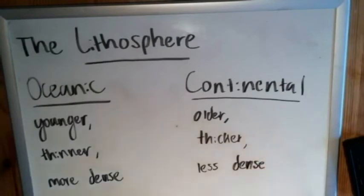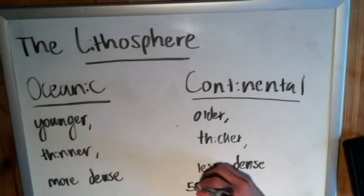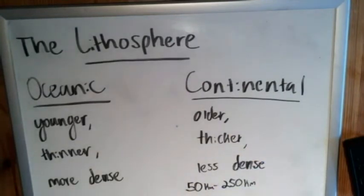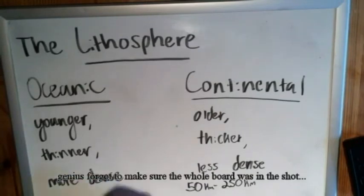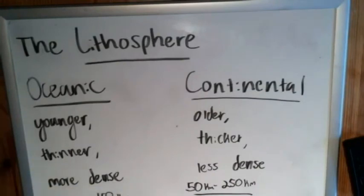To give you a sense of scale of how much the rigid part of the mantle adds when we classify it as the lithosphere: continental crust is usually about 50 kilometers at most, but the lithosphere goes anywhere from around 50 to 250 kilometers deep. Oceanic crust is usually about 10 kilometers thick at most, but oceanic lithosphere is usually around 10 to 150 kilometers thick. So the rigid piece of the mantle is a lot thicker than the crust itself.